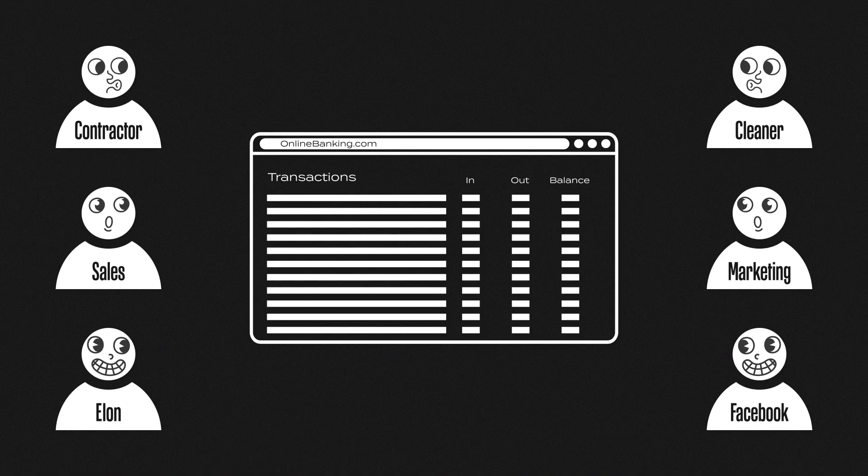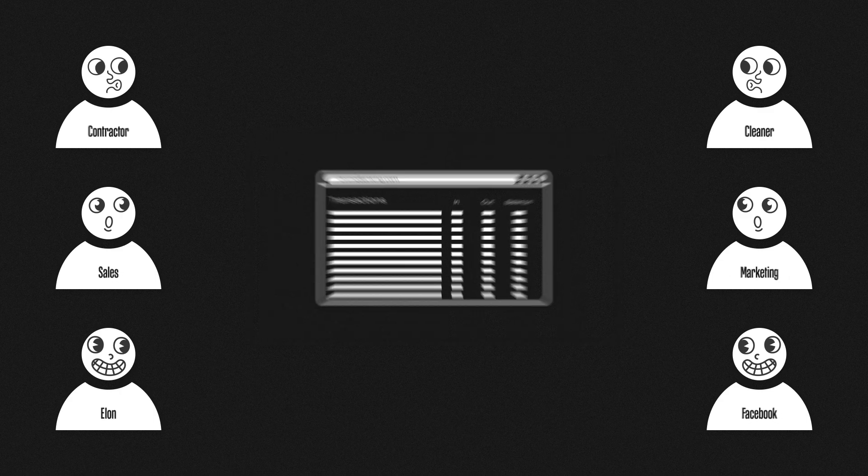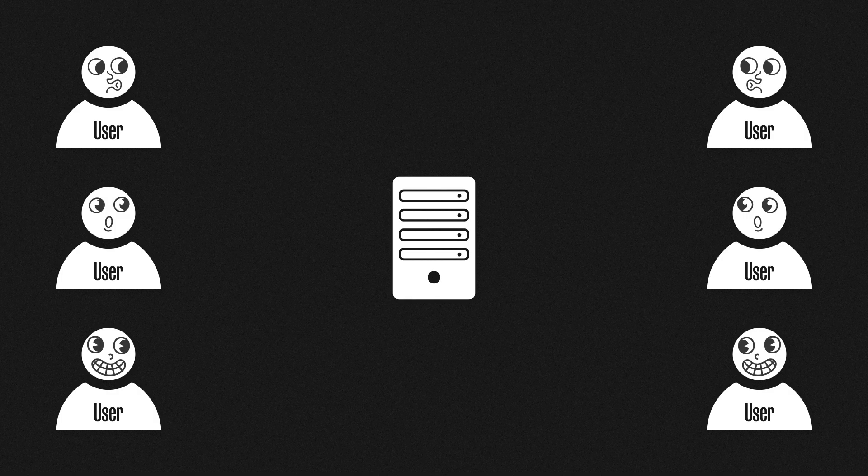Authorization is vital to security and ensuring the right people and systems have the right access. You wouldn't want anyone having access to your online banking, for example. You would want the correct authorization process in place to prevent anyone from accessing your accounts without your permission. Likewise, if you're an IT administrator or a security engineer, you wouldn't want everyone in the company having full access to the entire computer systems — you would want strict controls in place to limit access for each user. All of this comes down to authorization.